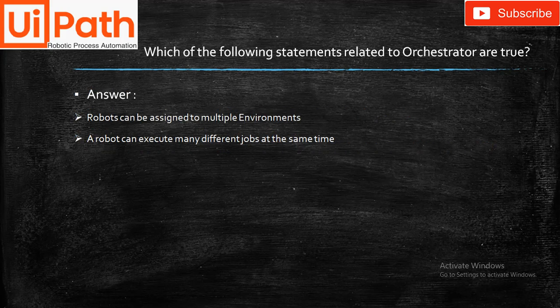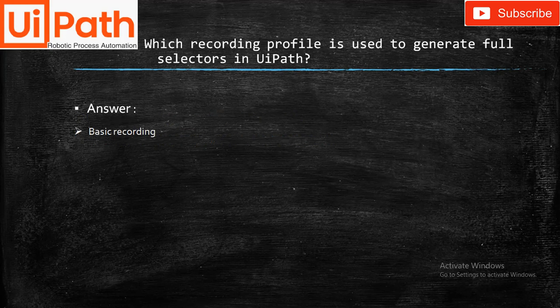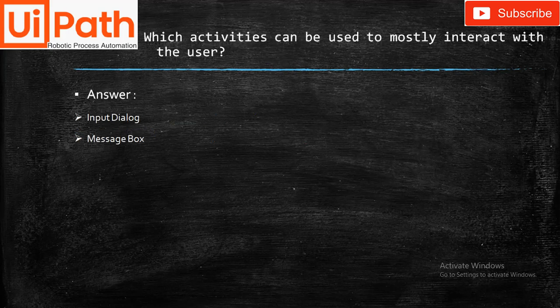Which of the following statements related to Orchestrator are true? There are four options and two of them are true: robots can be assigned to multiple environments, and a robot can execute many different jobs at the same time.